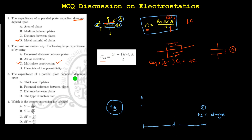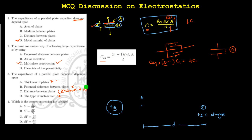Next MCQ: the capacitance of the parallel plate capacitor depends on which factor? Options include potential difference between the plates, distance between the plates, type of metal used, or thickness of the plate. It does not depend on the type of metal, does not depend on potential, and does not depend on thickness of the plate. It does depend on the distance between the plates, which you can also call the thickness of the dielectric. So that is the correct option.